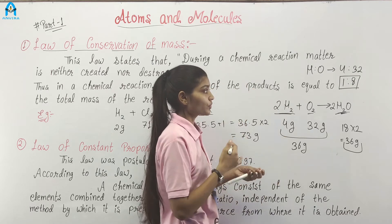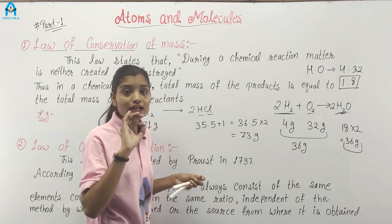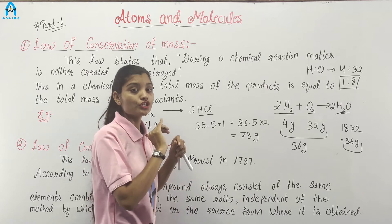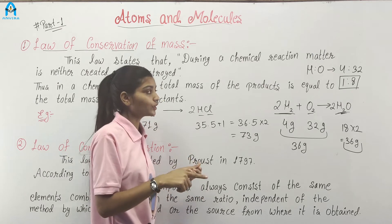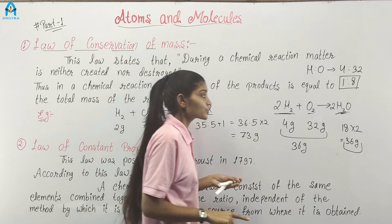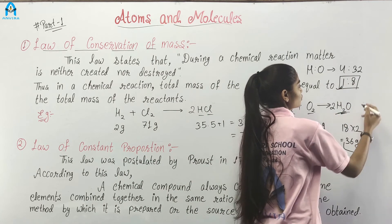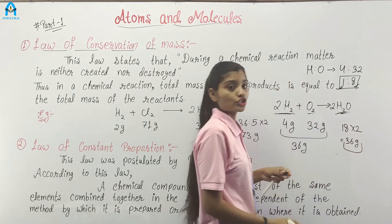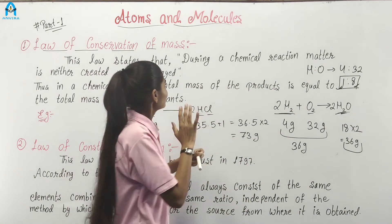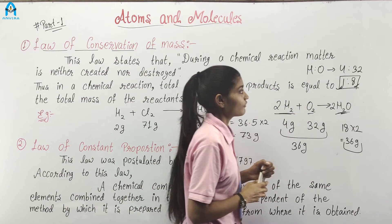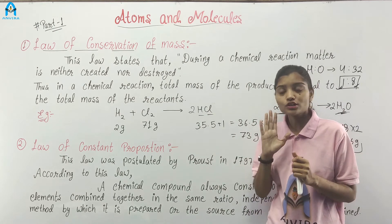In the opposite process, when we dissociate 9 grams of water, the product contains 1 part hydrogen and 8 parts oxygen. This confirms the law of conservation of mass.